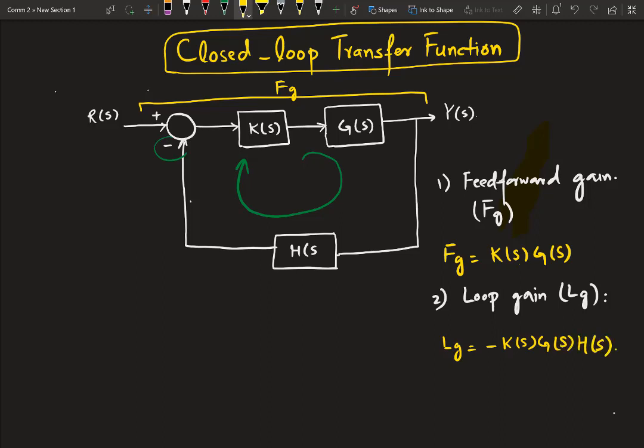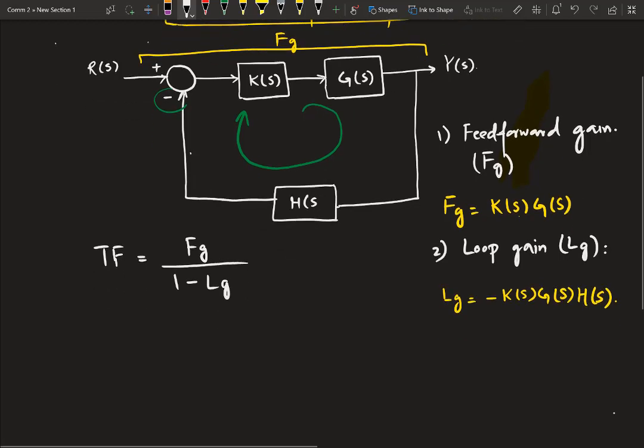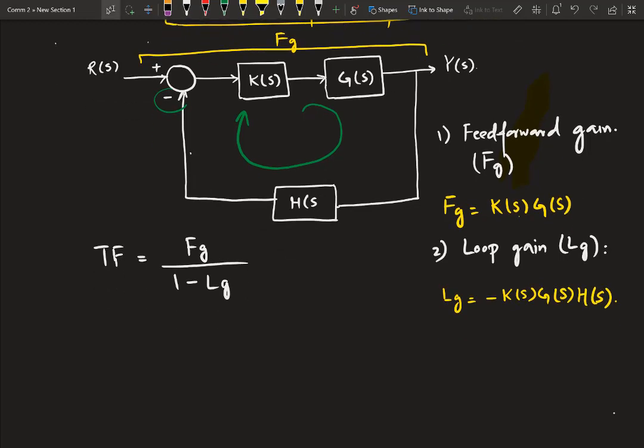Now since we have obtained these two gains, it is only one step to compute the closed-loop transfer function. The closed-loop transfer function in terms of these two gains is given by Fg divided by 1 minus Lg. If you have the negative feedback system, then you will have minus sign over here in the denominator. And you will have positive sign if you have positive feedback. So, this is the generic formulation. You just need to put the values of feedforward gain and the loop gain into this expression.